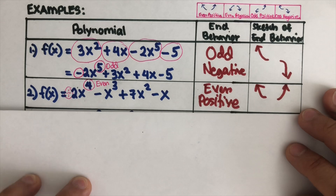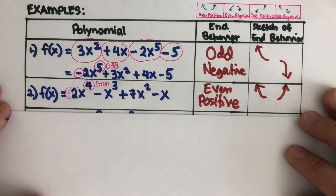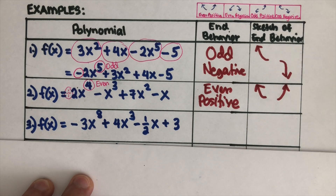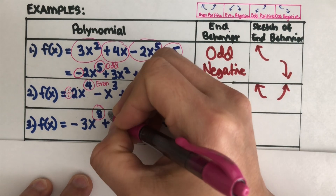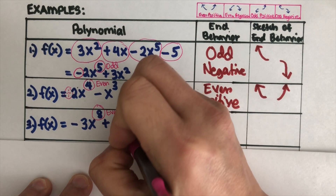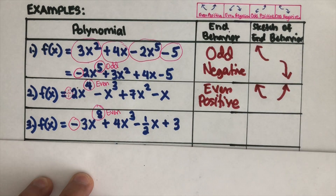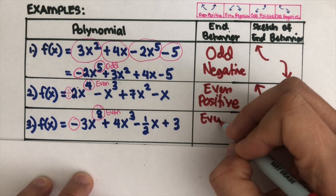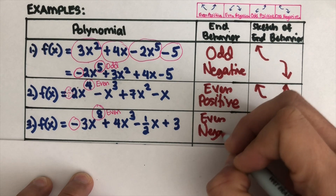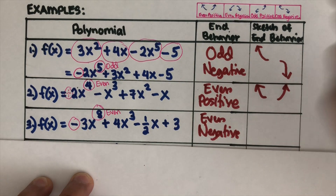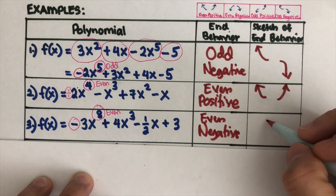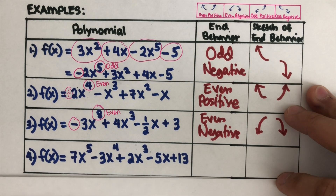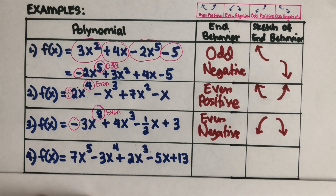Let's take the next example. Again, we look at the highest exponent — it is 8, which is even — and the leading coefficient is negative, so this is even negative. The shape of the graph will resemble that shape, going down on both ends.